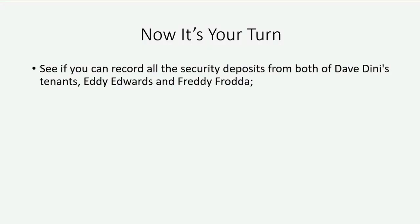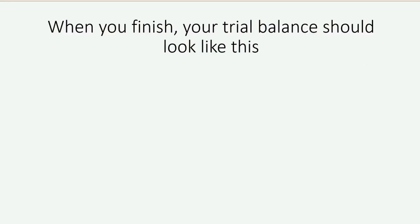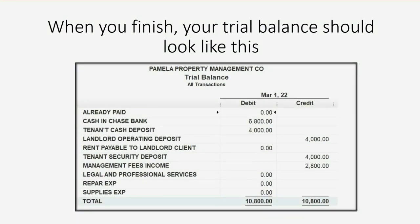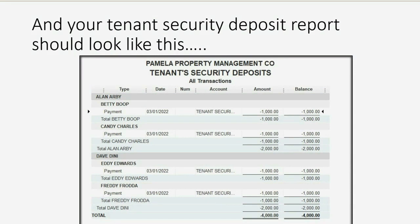Now it's your turn. See if you can record all the security deposits from both of Dave Deeney's tenants, Eddie Edwards and Freddie Froda. We received $1,000 from each of them on March 1 for their tenant security deposit. Try to do it by repeating what you saw in this video. When you finish, your trial balance should look like the example shown, and your tenant security deposit report should match as well. If they don't, go back and find and fix mistakes the way we learned in prior videos. You can rewind and pause to compare your reports.